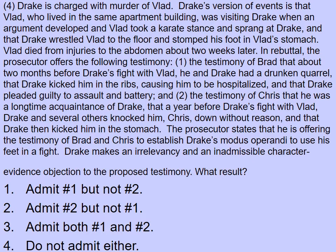Evidence that Drake had two prior fights in which he kicked his victims is relevant really only to prove his disposition to commit violence and use his feet, and that he acted in conformity with that disposition when he assaulted Vlad. Evidence of a defendant's commission of prior crimes is not admissible when this is the only theory that gets you relevancy. This is a good example of how necessary it is for a trial judge to make the correct analysis of the disputed issues of fact — because a common scheme, plan, or modus operandi can only have relevance when there's a disputed issue as to the identity of the perpetrator of the charged crime.